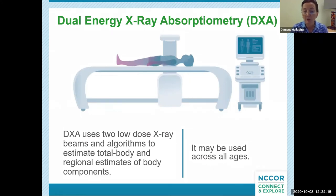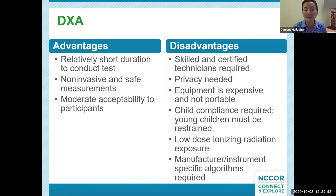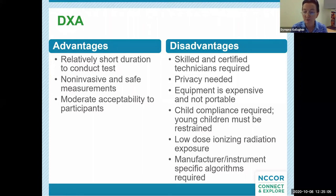Dual energy X-ray absorptiometry, or DEXA, uses two low-dose X-ray beams and instrument-specific algorithms to estimate total body and regional estimates of body components, including bone mineral content, bone-free fat-free mass, and fat mass. This method can be used across all ages from infancy through adulthood. Advantages include relatively short duration, non-invasive and safe, and moderate acceptability. Disadvantages include skilled and certified technicians required, privacy needed, equipment is expensive and not portable, young children must be restrained, low-dose ionizing radiation exposure is involved, and manufacturer instrument-specific algorithms are required.